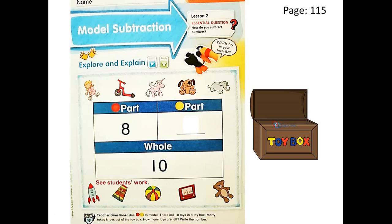There were 10 toys in this box. The whole is 10 toys. Marty likes toys very much and she takes 8 toys out of the toy box. So the first part is 8.